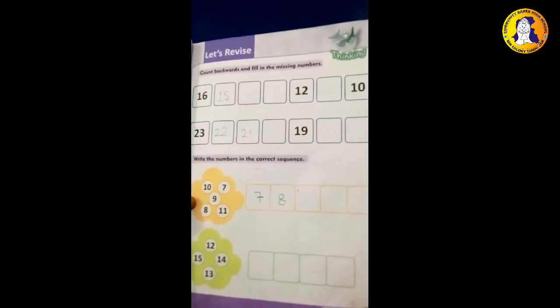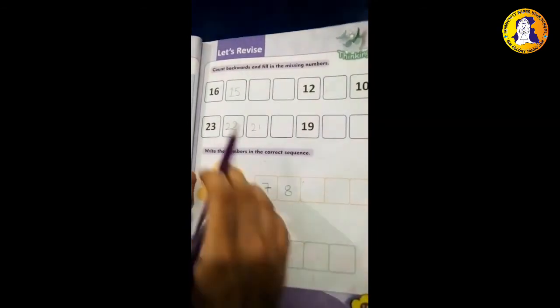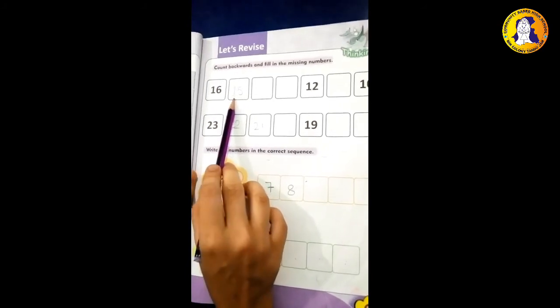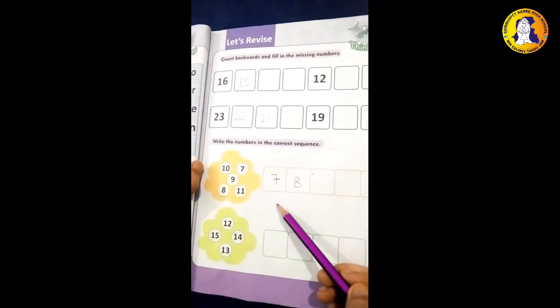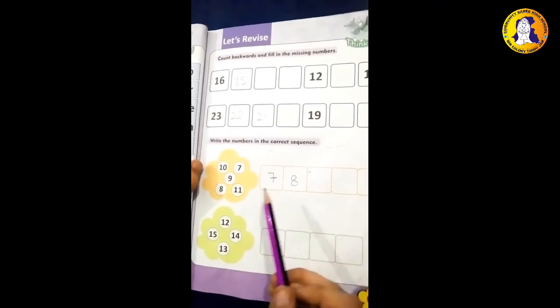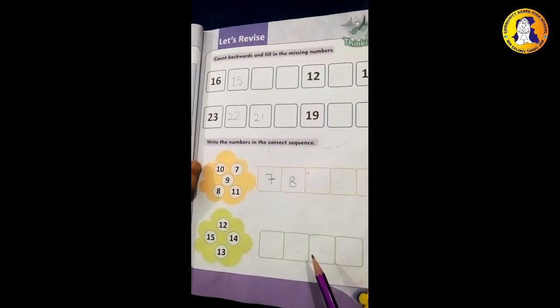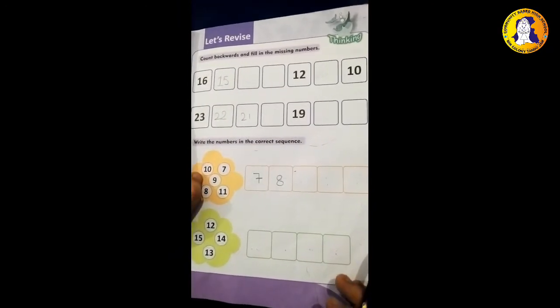So now our lesson is finished. Today what did we learn? Backwards counting. Keep filling the missing numbers. Here I have written 16 to 15, fill here. We have to write the correct sequence. Here we have to write the first number. We have to do counting. This time I have to do all the writing.